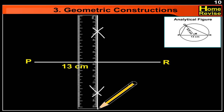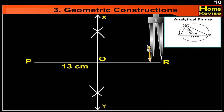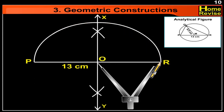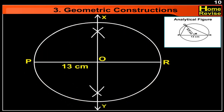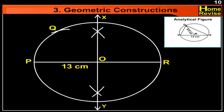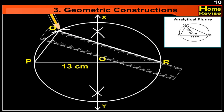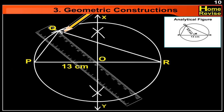Now let us draw the perpendicular bisector of segment PR and name this line as line XY. Let line XY intersect segment PR at point O. Now taking O as the center and OP as the radius, let us draw a circle. Let us take any point Q on the circle and join PQ and RQ.